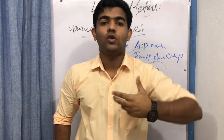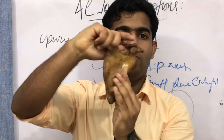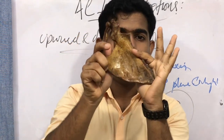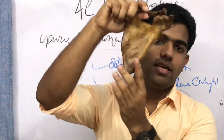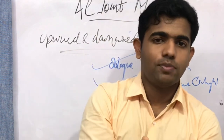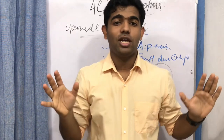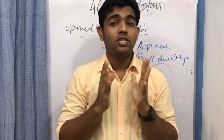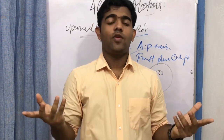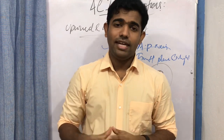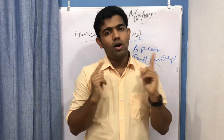To summarize all three movements: internal rotation — glenoid fossa moves anteromedially; external rotation — posterolaterally; upward rotation — glenoid fossa moves upward and inferior angle moves laterally; downward rotation — glenoid fossa moves downward and inferior angle moves medially; anterior tilting — acromion moves forward and inferior angle moves backward; posterior tilting — acromion moves backward. That completes the acromioclavicular joint movements. In the next session we will move on to the scapulothoracic joint, which is a functional joint with no true anatomical definition.